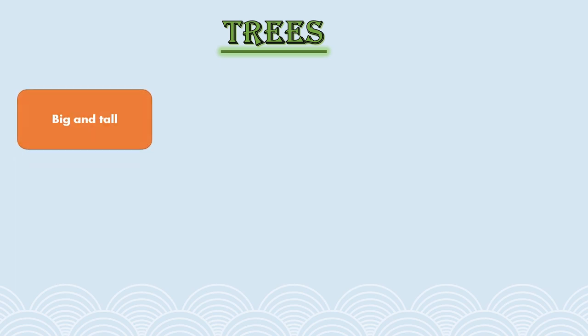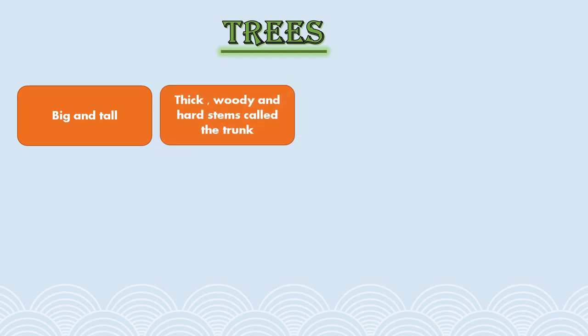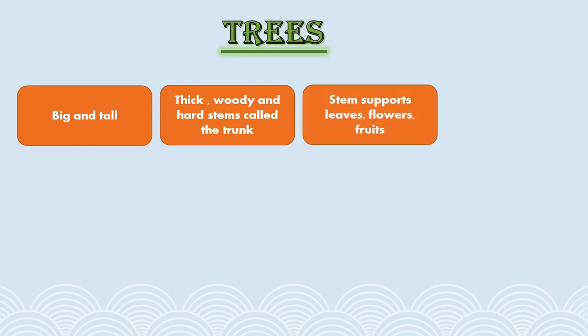Now we'll talk about trees. Trees are strong, big and tall plants. They have very thick, woody and hard stems called the trunk. This single main stem, or the trunk, gives rise to many branches that bear leaves, flowers and fruits.